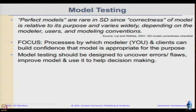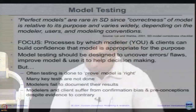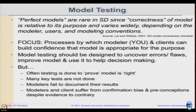Model testing should be designed so we can uncover the various flaws or errors we make in modeling. Some are straightforward programming errors, but logical errors are more difficult. We tend to do testing to prove the model is right rather than to uncover what the right model is. Modelers and clients also have confirmation bias and preconceptions despite evidence to the contrary, so we need to address these things systematically.